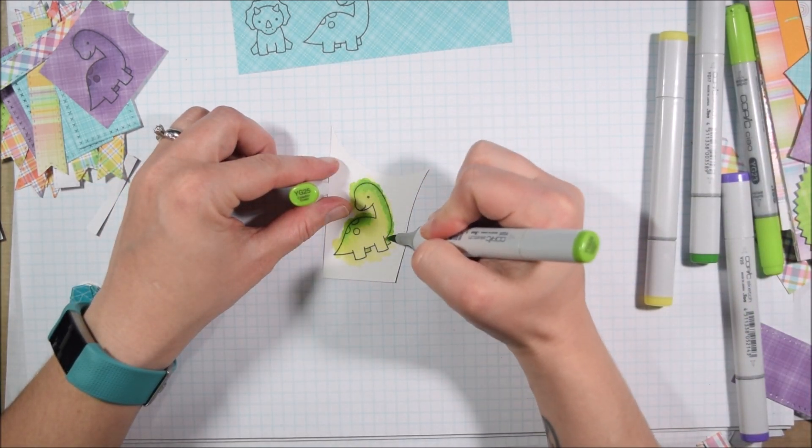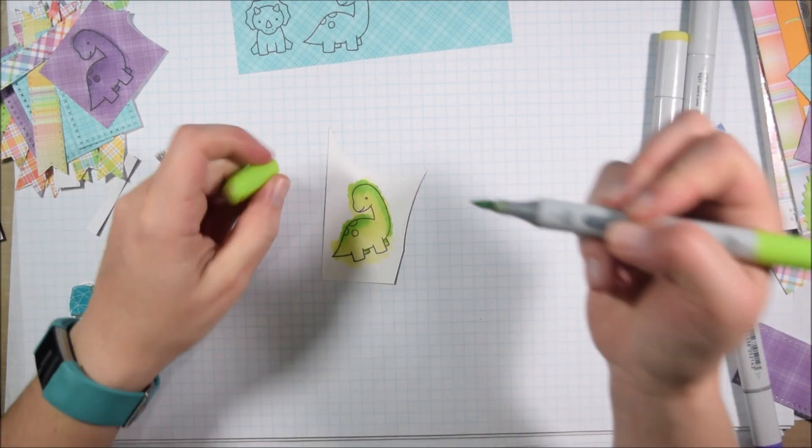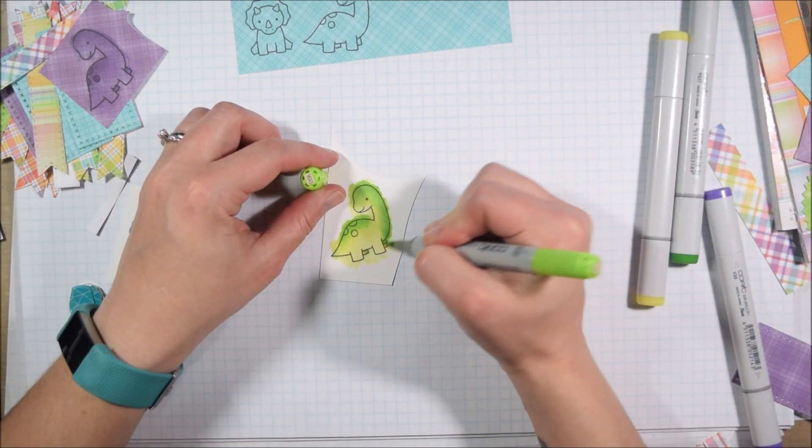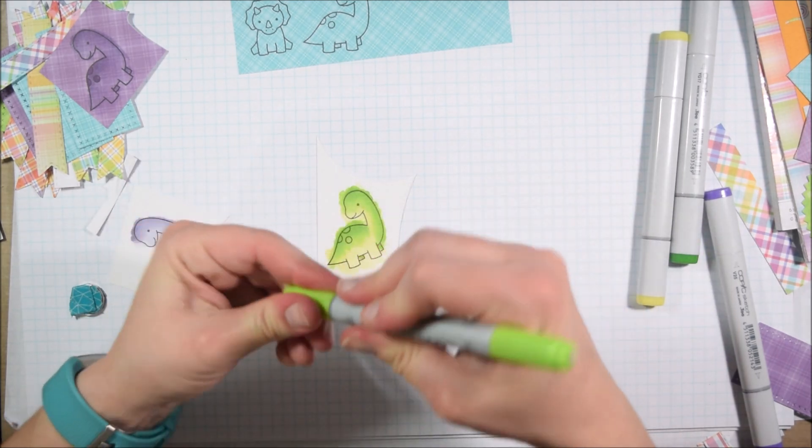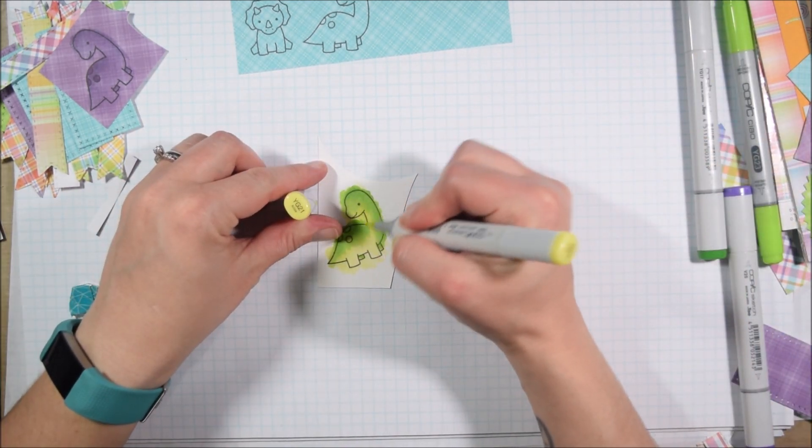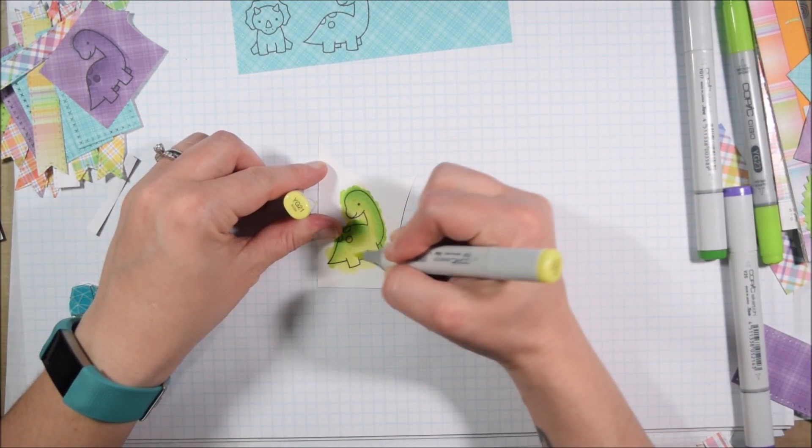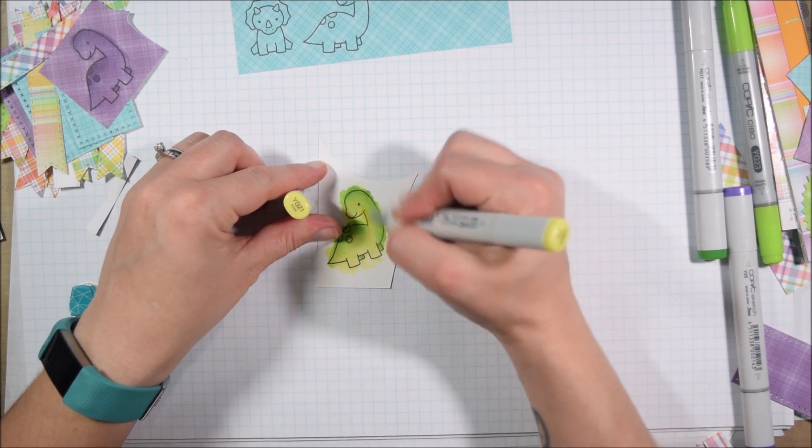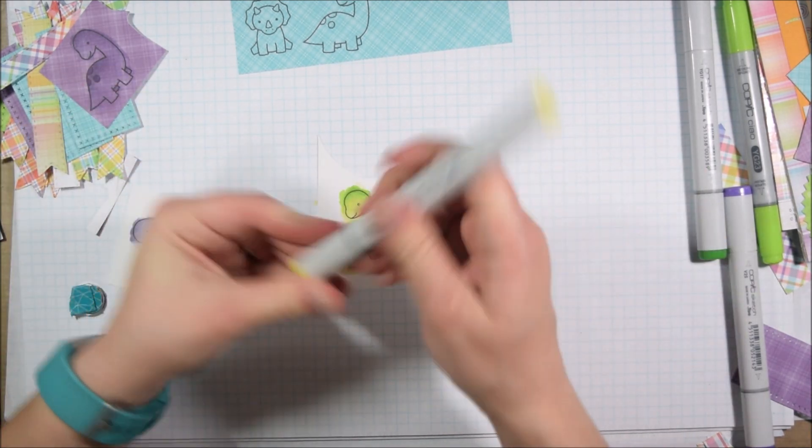It's similar to the 110 lb from Neenah that a lot of people like to use, it's just a bit cheaper. I think part of the reason I had a difficult time blending this is because when I colored the purple dinosaur, it blended in a similar amount of time as the pattern paper.